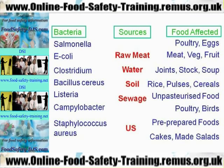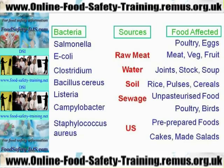You might want to make a note of this slide because questions quite often come up on where the bacteria are found and what food they tend to affect. Salmonella, e. coli, clostridium, bacillus cereus, listeria, and campylobacter are found in raw meat, water, soil, and sewage. Staphylococcus aureus is found in us — we are the natural reservoir.